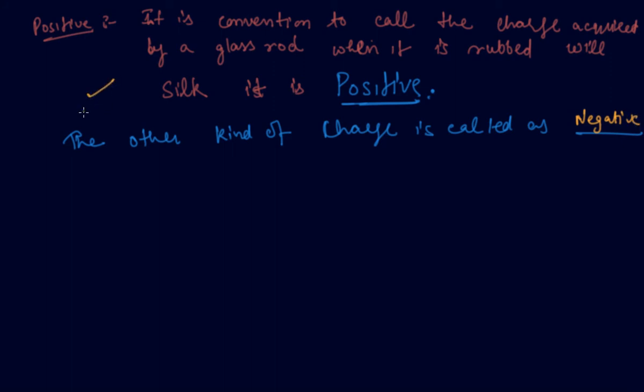So students, positive charge is the charge when a glass rod is rubbed with silk. So it is called as positive. And the other charge is called as negative.